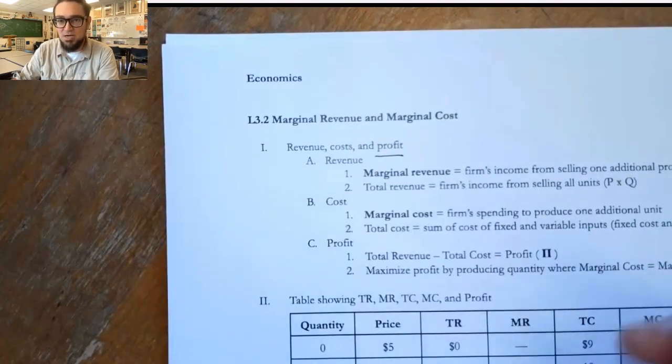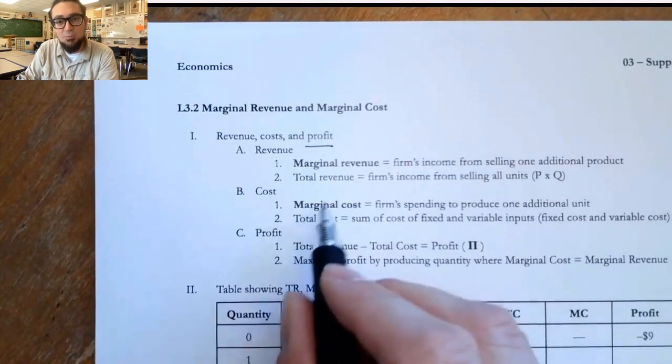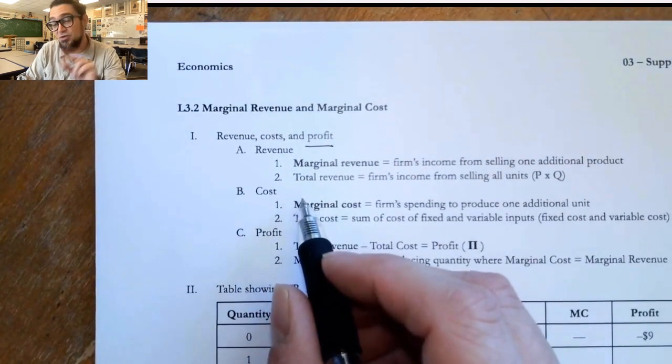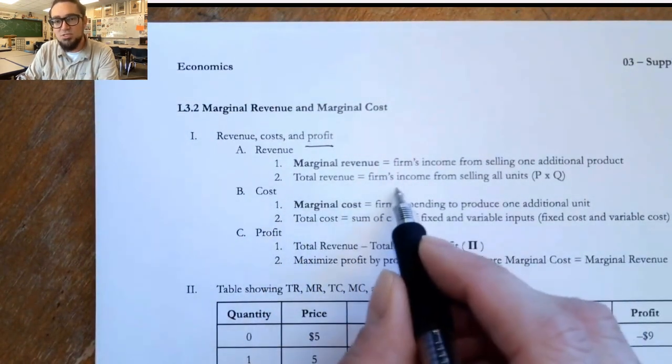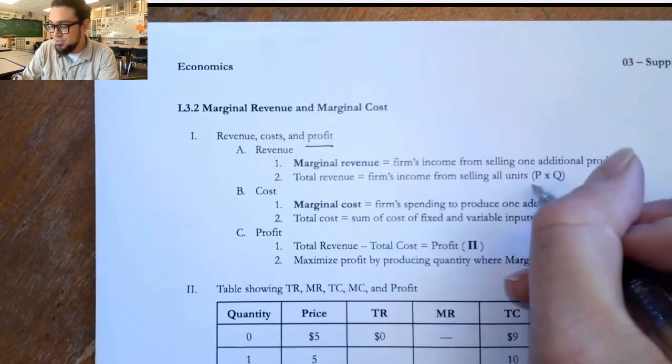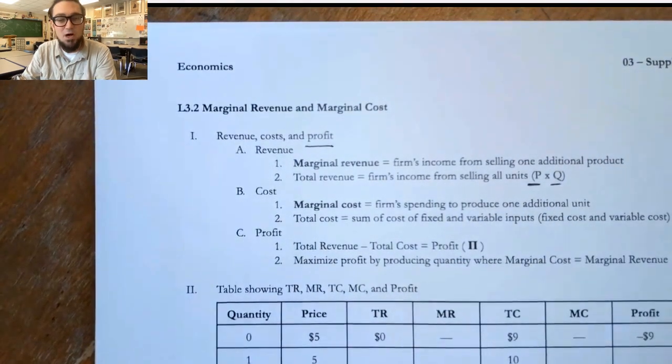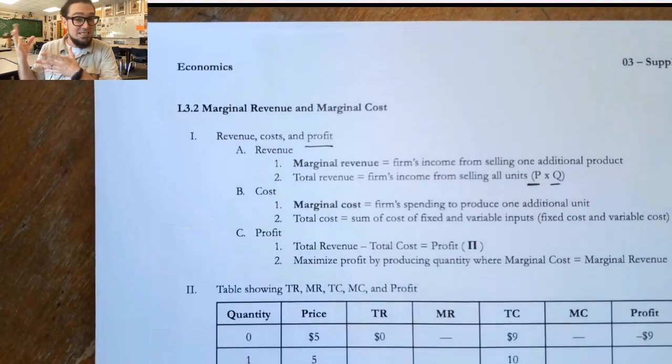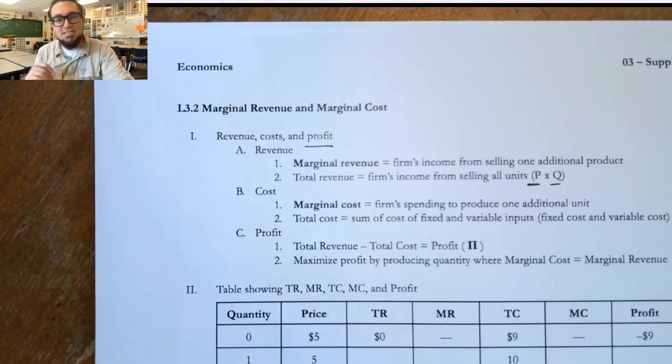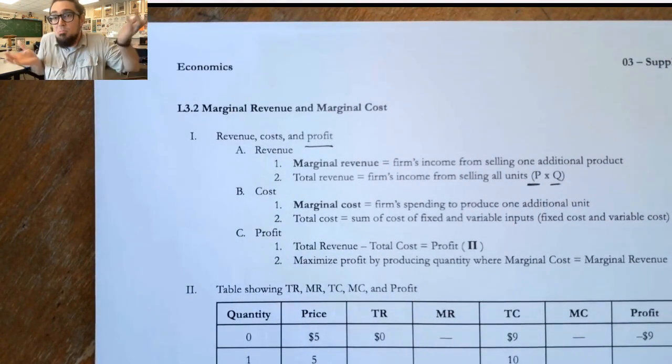Revenue, costs and profit. Now, the first thing to remember is that we learned about revenue in unit two, when we learned that total revenue is just the firm's income from selling all its units. And we usually just say it's the price times the quantity. And we learned that you could maximize total revenue at the unit elastic point of the demand curve. And then we went, that's about it.